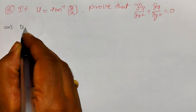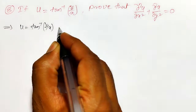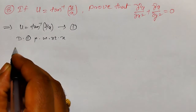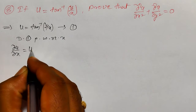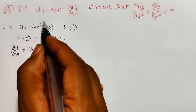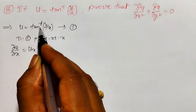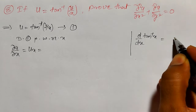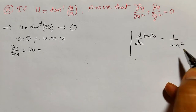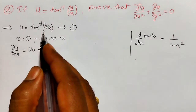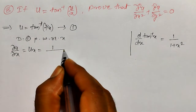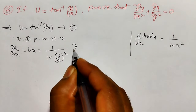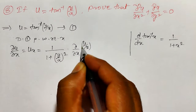Let me call u equal to tan inverse of y divided by x as equation number 1. Differentiating 1 partially with respect to x, I am going to get ∂u/∂x. The partial derivative of tan inverse of y divided by x — treating this as tan inverse of x, the ordinary derivative of tan inverse of x is 1 divided by 1 plus x square. So applying the chain rule, it becomes 1 divided by 1 plus (y/x) whole square, into the partial derivative of y divided by x with respect to x.